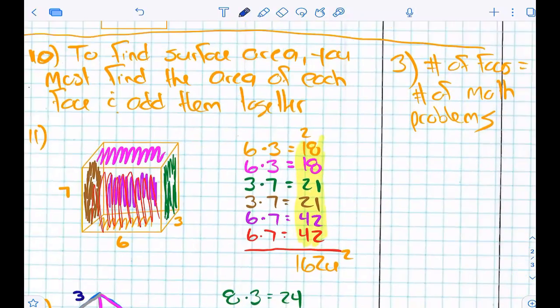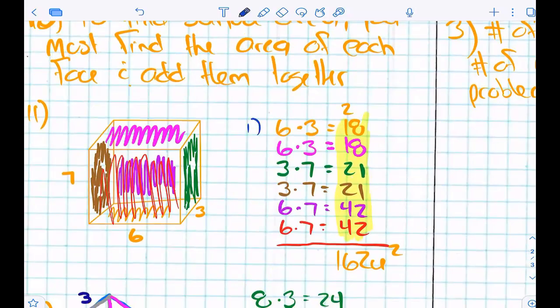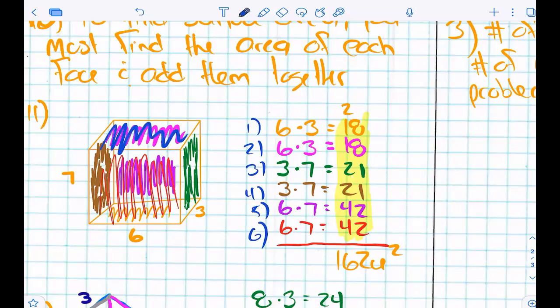So how many math problems should I be doing? Six. It says right here: number of faces equals number of math problems. So we're going to find the area: one, two, three, four, five, six. We're going to find the area of all six faces. This is the face on top. This is the face on bottom.